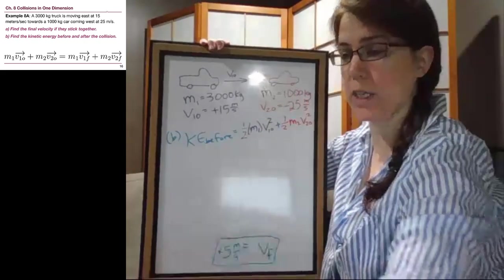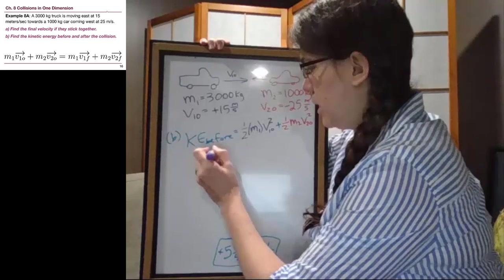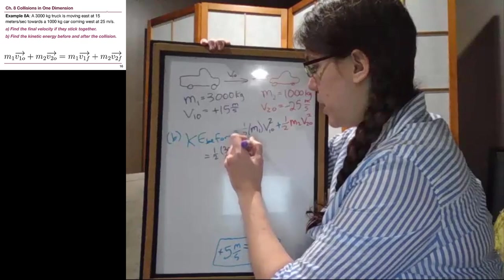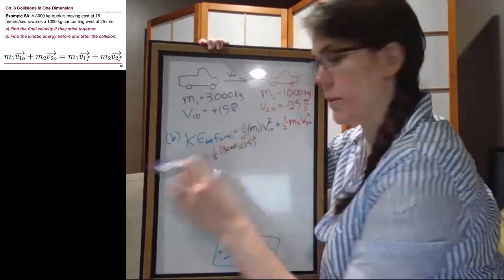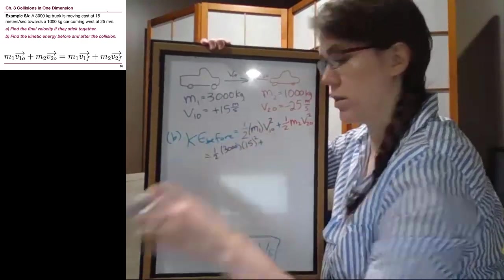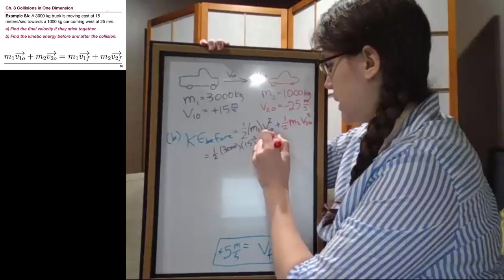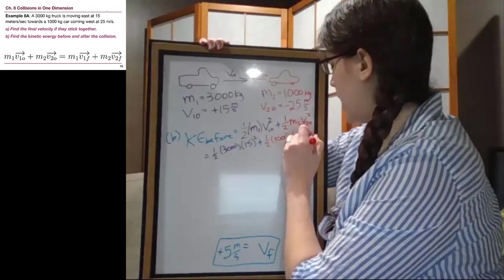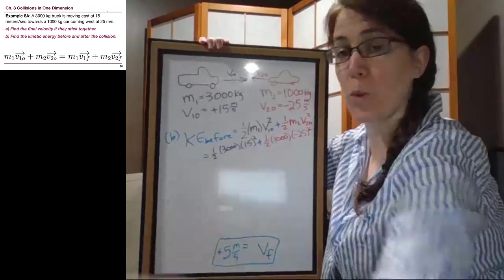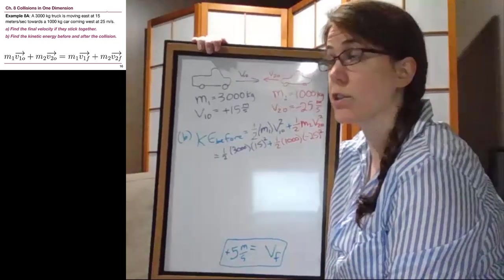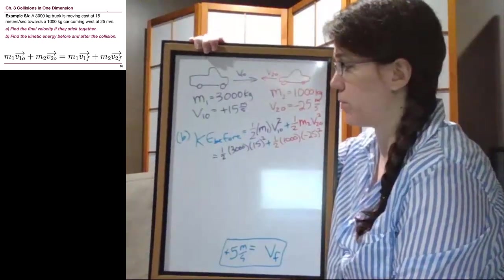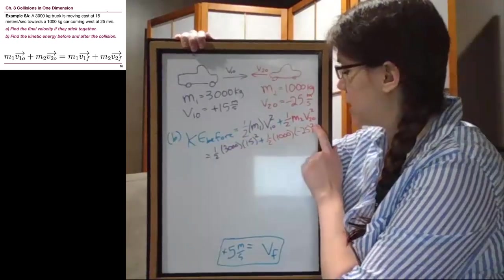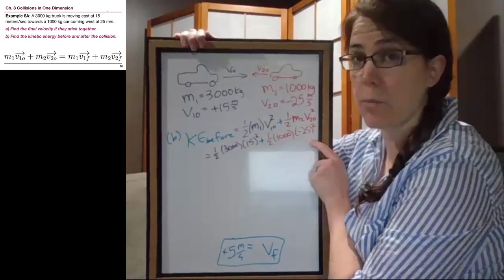So we have one half times 3,000 times positive 15 squared. We also have one half times 1,000 times negative 25, where that negative 25, we can either ignore the negative sign because energy doesn't care about direction, or we can recognize that mathematically the negative sign is within parentheses, and when we square it, it will become positive. Whatever works best for you is perfectly fine.